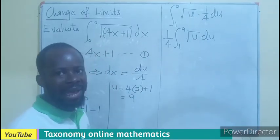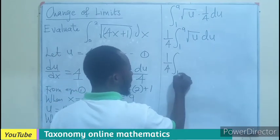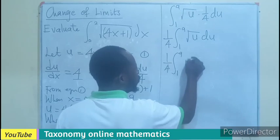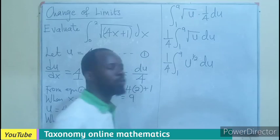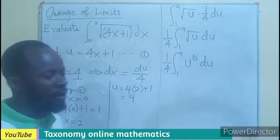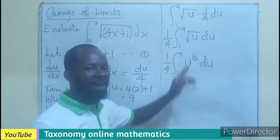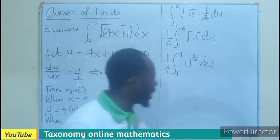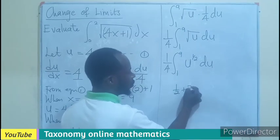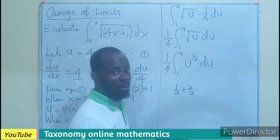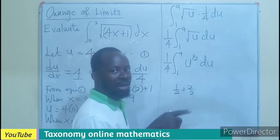Now, the root can be converted to the exponent of half. So, 1 out of 4, integral spanning from 1 to 9, U exponent 1 over 2, then DU. So, now here, we perform our integration. We know that we are going to add 1 to this and divide by the result. So, that is going to be 1 over 2 plus 1, and 1 is also 2 over 2. The same denominator, we add the numerator, that gives us 3 out of 2.